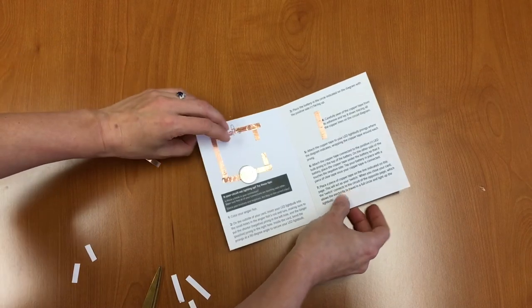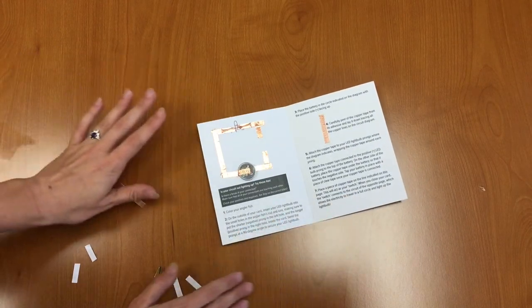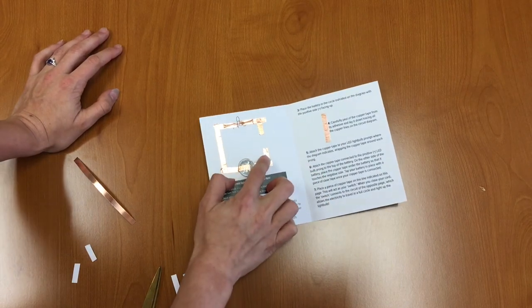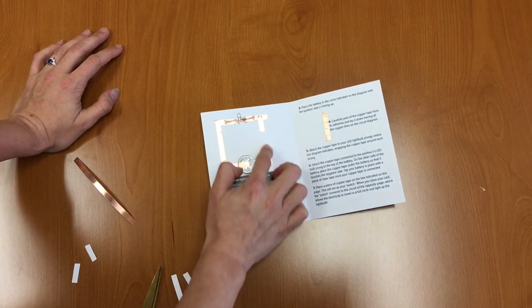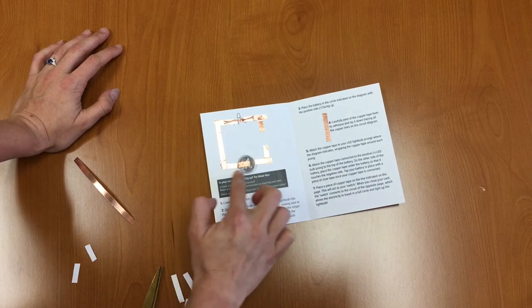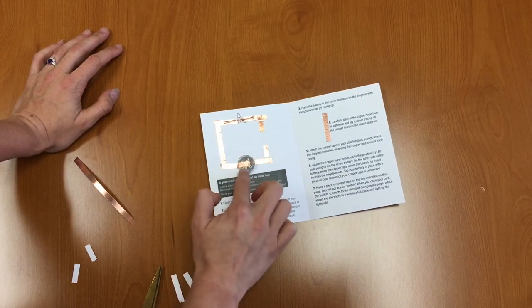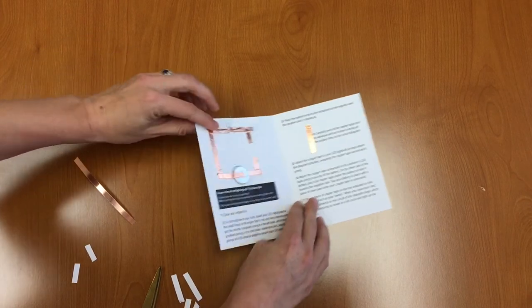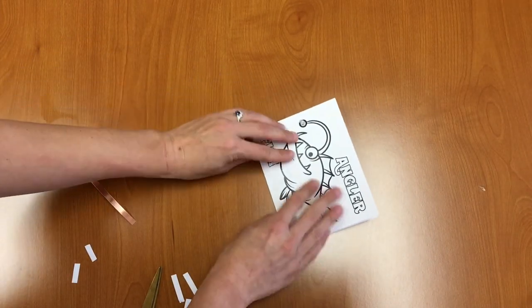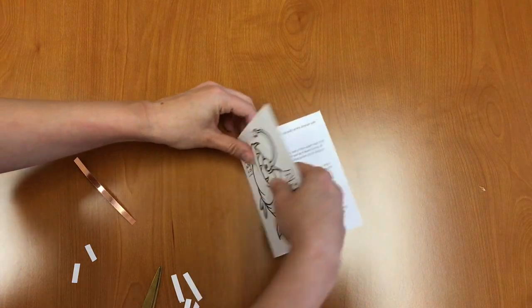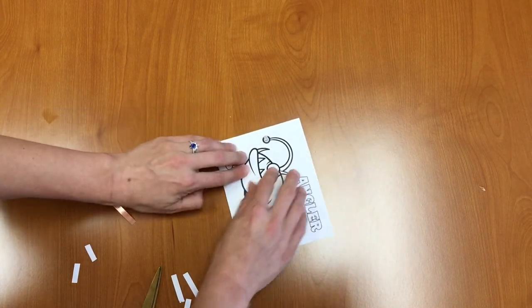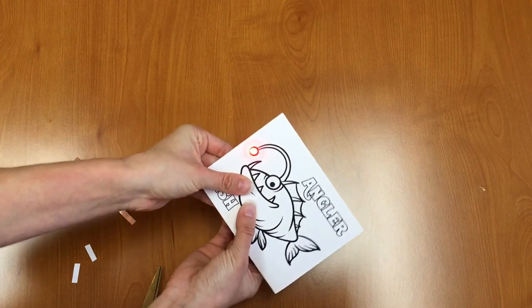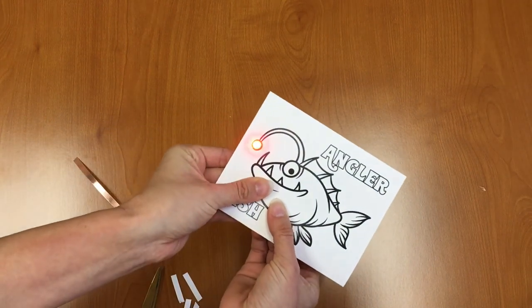So now what should happen is when we close our card, the switch right here on the right-hand side should connect the two gaps right here on the left-hand side and create a complete closed circuit for electricity to flow through, allowing the battery to light up the light bulb. So let's see if we did this right. So I'm closing my card. We're seeing if the connection was made. And there we go. We have achieved a light.